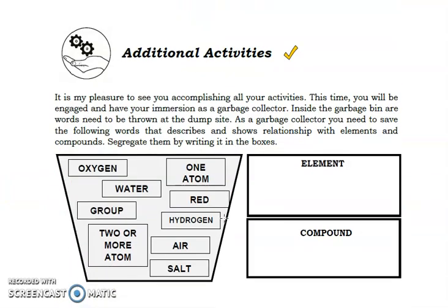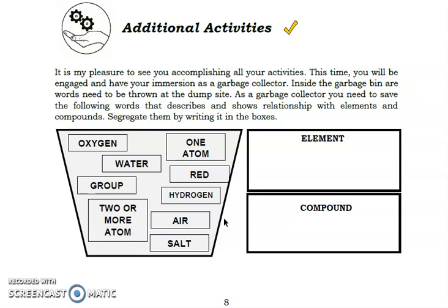For our last activity for today, you will just segregate the following words or properties as to element and compound. Write the word additional activities. And then again, two boxes with labels, element and compound. Then classify the words on their proper boxes.